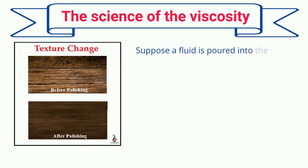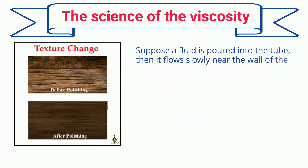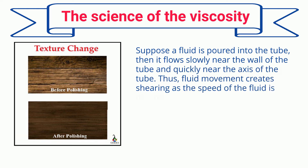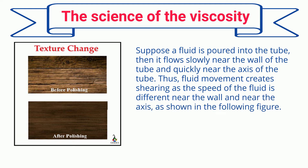Suppose a fluid is poured into a tube — it flows slowly near the wall of the tube and quickly near the axis. Thus, fluid movement creates shearing, as the speed of the fluid is different near the wall and near the axis, as shown in the following figure. Shear is created when liquid is poured into a tube.